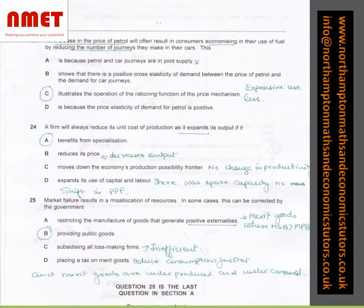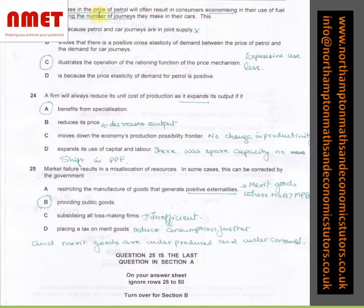Moving on to question number 23. An increase in the price of petrol will often result in consumer economizing in their use of fuel by reducing the number of journeys that they make in car. This, I have stated answer is C, which illustrates the operation of rationing function of price mechanism. Expensive, therefore people use it less.